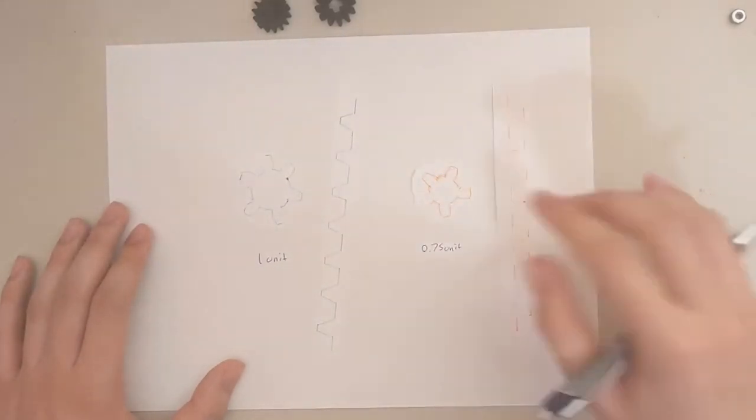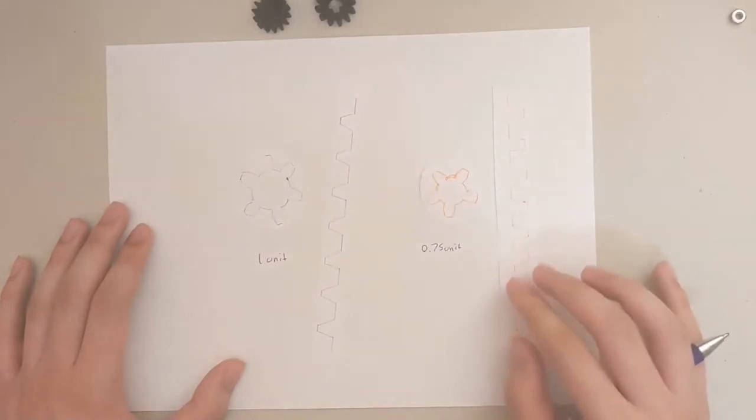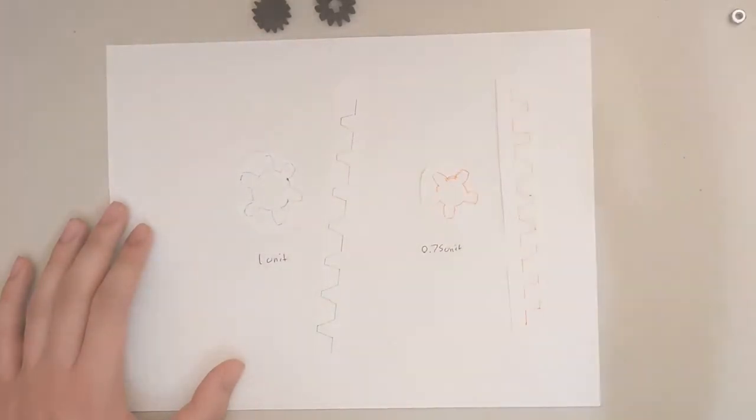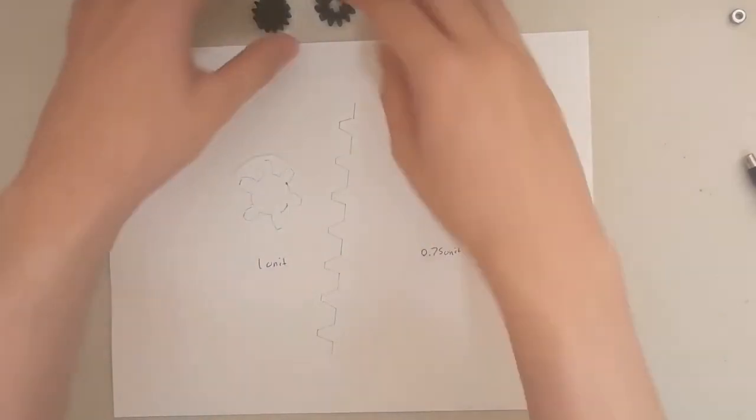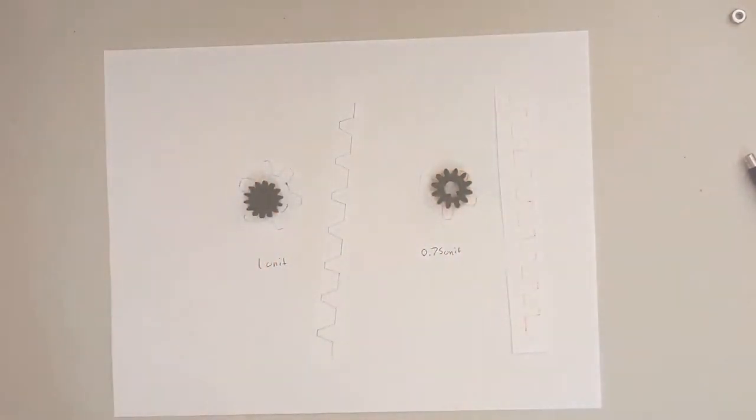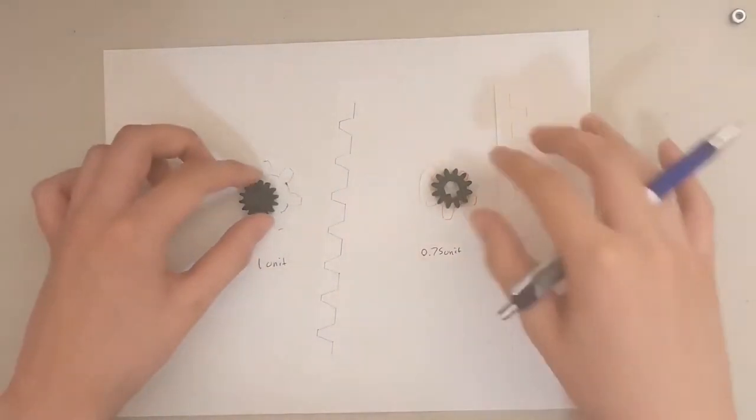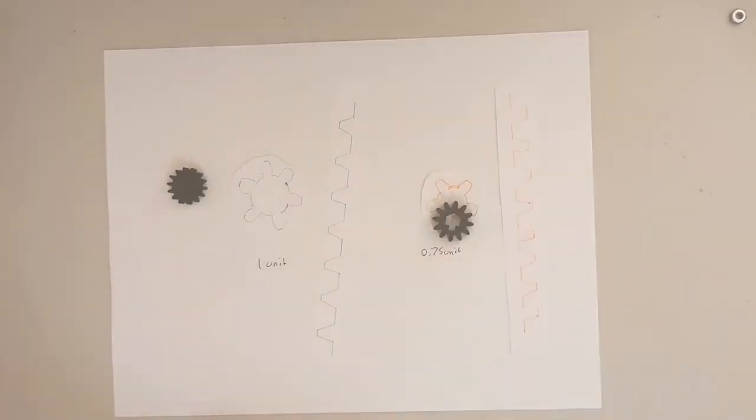So what does that mean? That means for every one rotation of this gear, this rack moves up and down 0.75 units. So these pinions represent our planetary gears in our gear set.